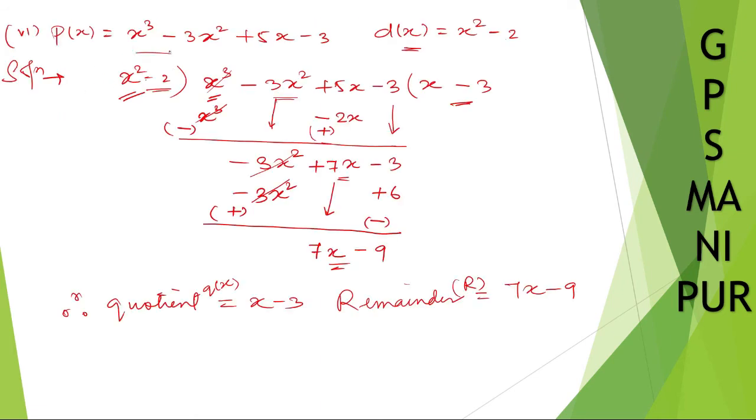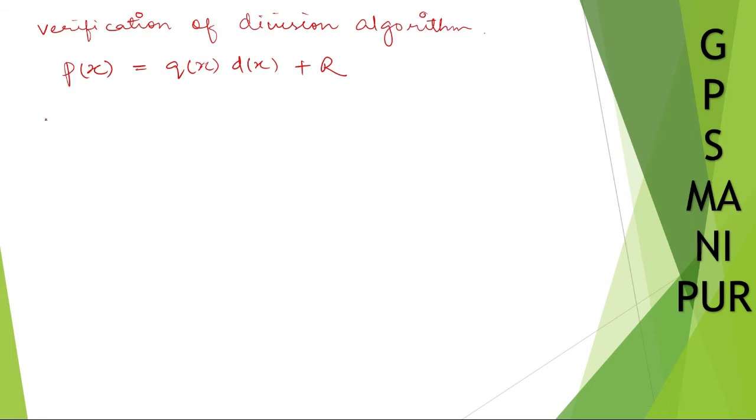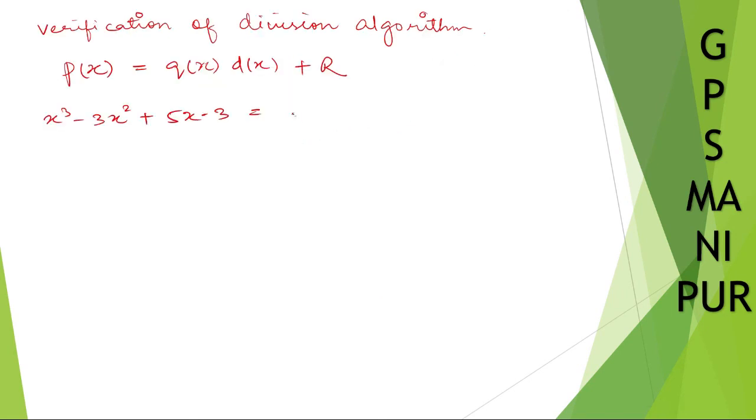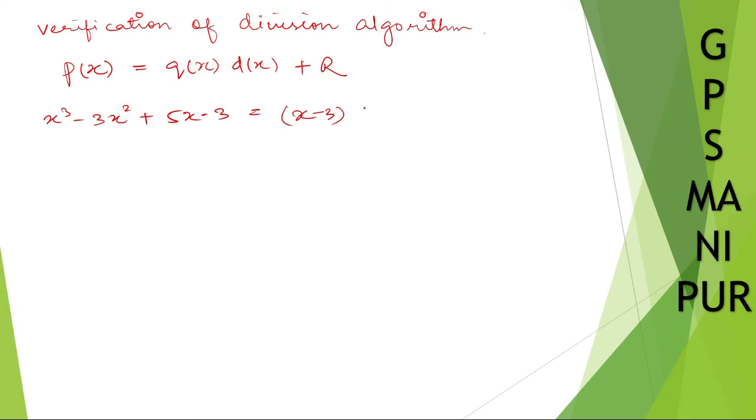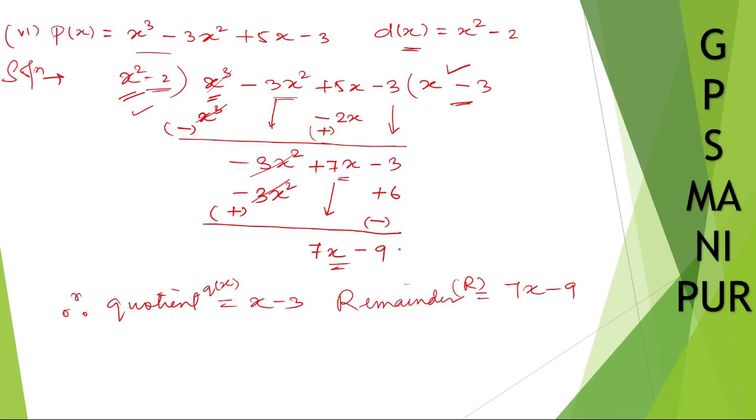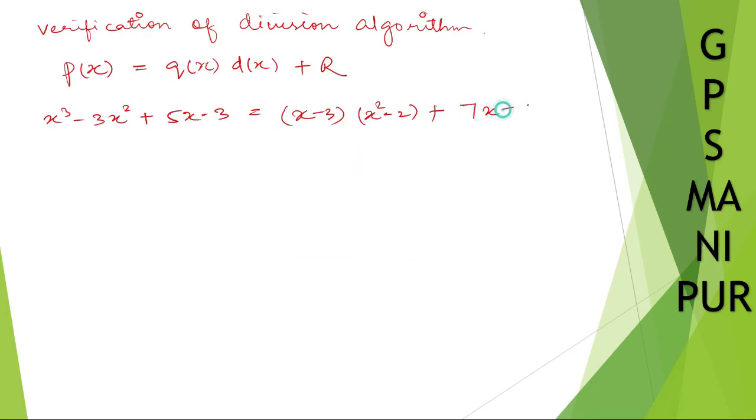What is q of x? This is q of x. So x minus 3. What is d of x? d of x is this one x square minus 2. And what do we get? Reminder this one. Reminder 7x minus 9. So 7x minus 9.